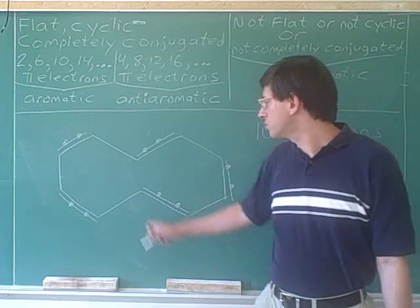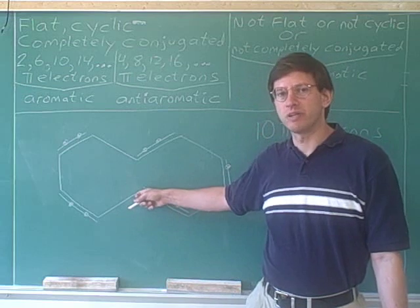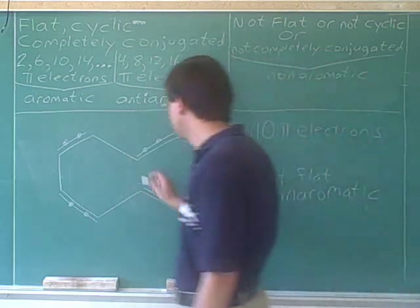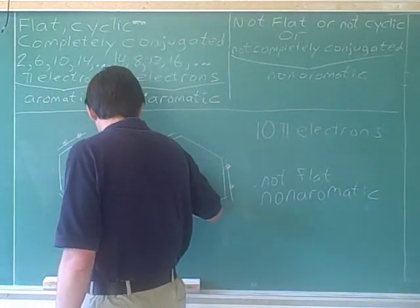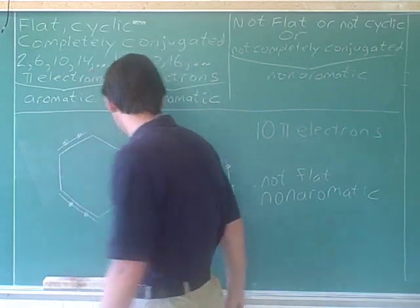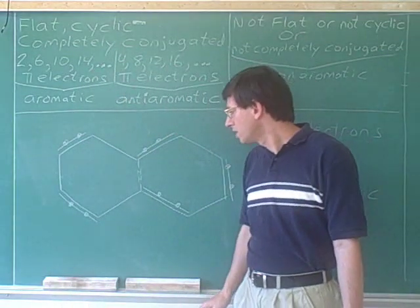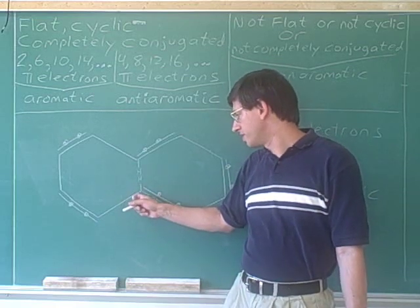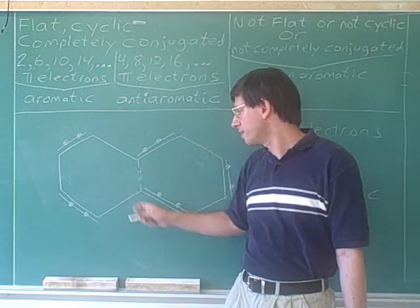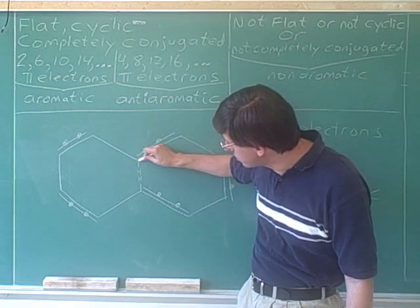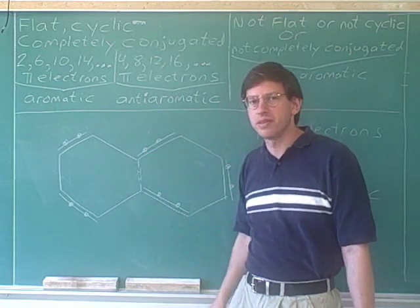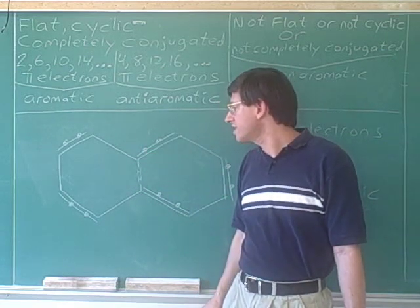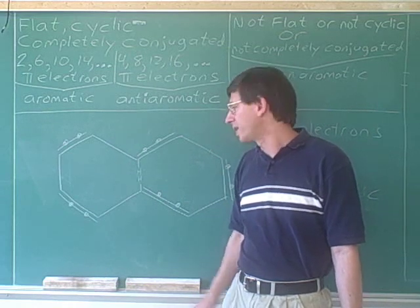The big problem is the two hydrogens on these two carbons. Let's draw those hidden hydrogens in. Because each of these carbons is trigonal planar, we can see what the geometry is going to be. This hydrogen must be pointing straight up vertically, and this hydrogen is pointing straight down vertically from this carbon. And you can start to see that there's going to be a major steric hindrance problem.